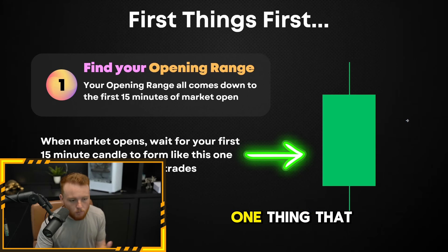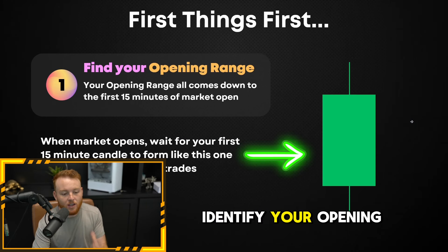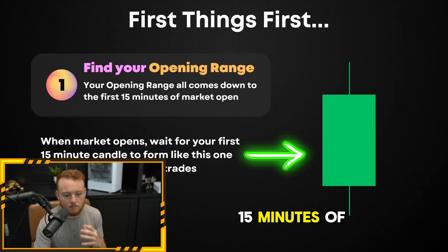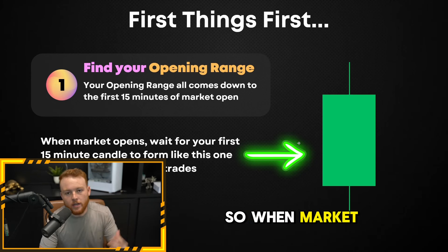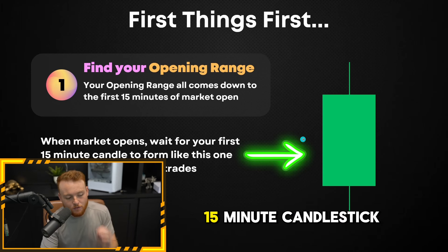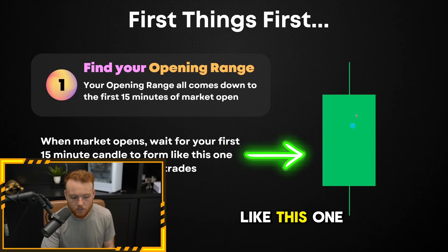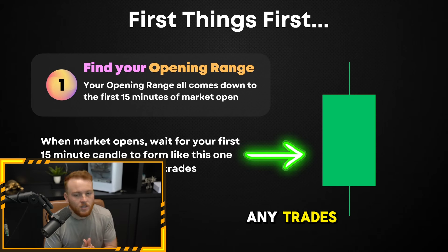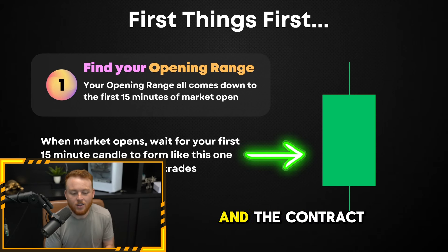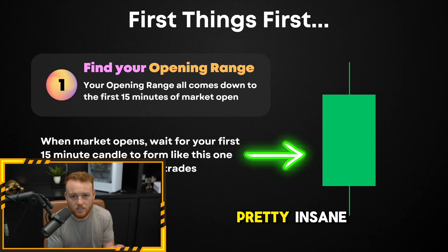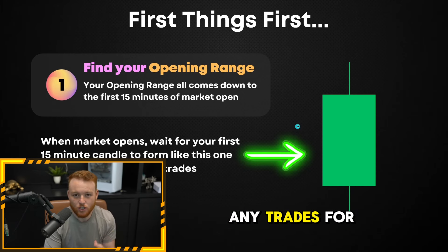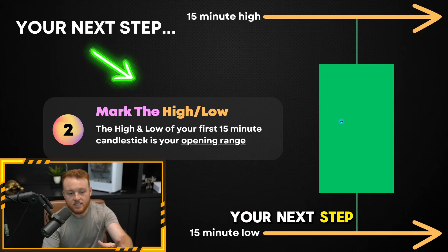First things first — the number one thing you have to do is identify your opening range. Your opening range all comes down to your first 15 minutes of market open. When market opens at 9:30 AM Eastern time, you want to wait for your first 15-minute candlestick to form before taking any trades. The first 15 minutes of market open is extremely volatile and the contract spread price is pretty insane.